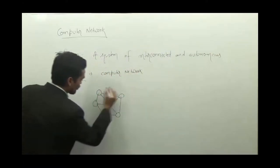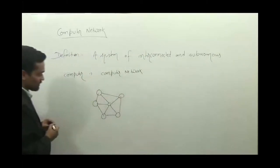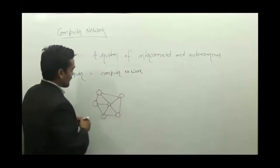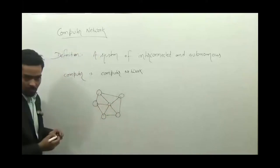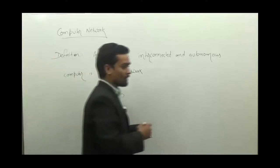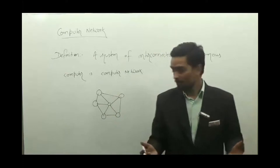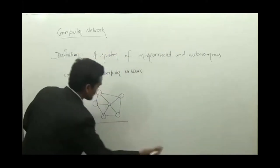But if these autonomous computers, these autonomous systems are connected to each other in such a way that they can communicate, they can share resources, then we can say that this system is a computer network.